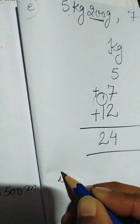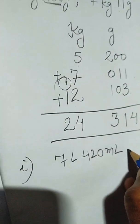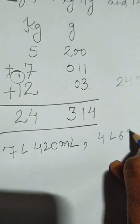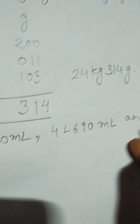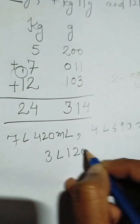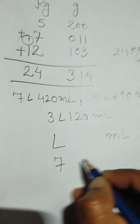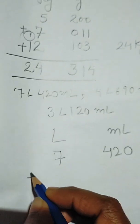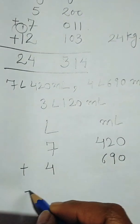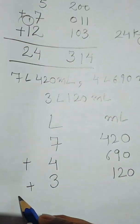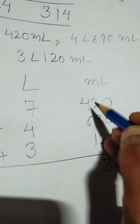Now part I. The statement is 7 liter 420 milliliter, 4 liter 690 milliliter, and 3 liter 120 milliliter. The units are liter and milliliter. We write: 7 liter 420 milliliter, 4 liter 690 milliliter, and 3 liter 120 milliliter. Now we will add these.